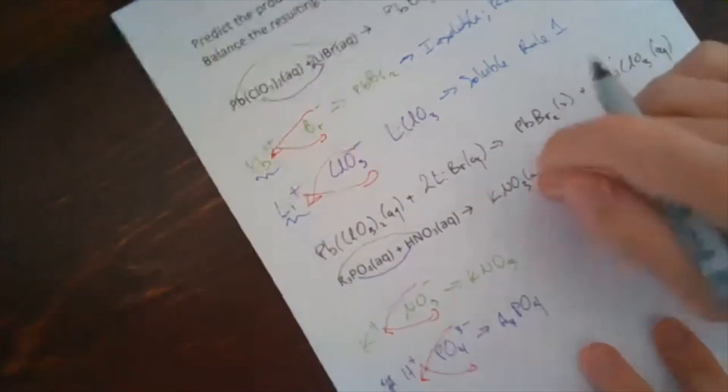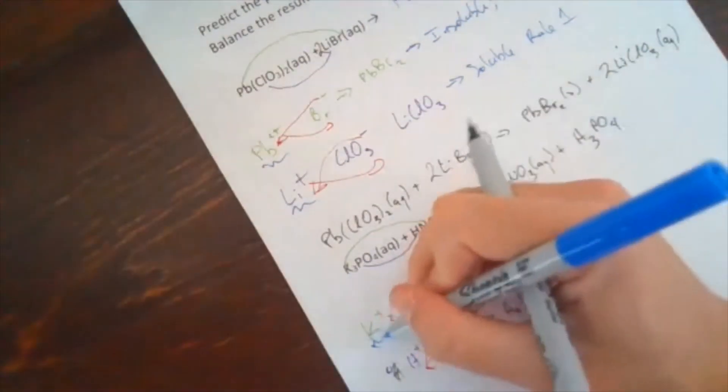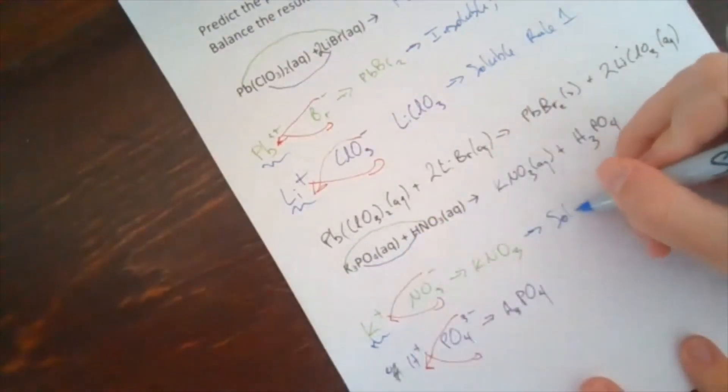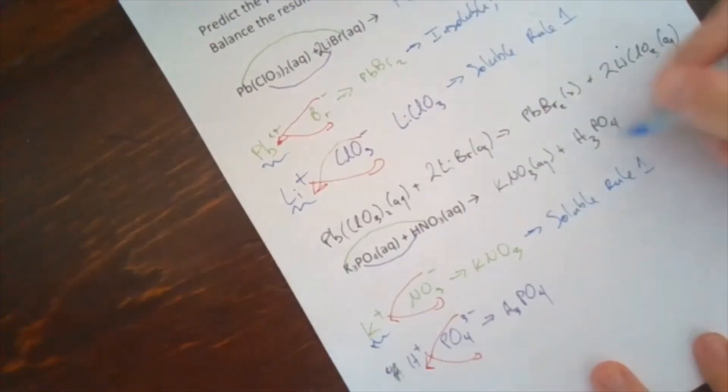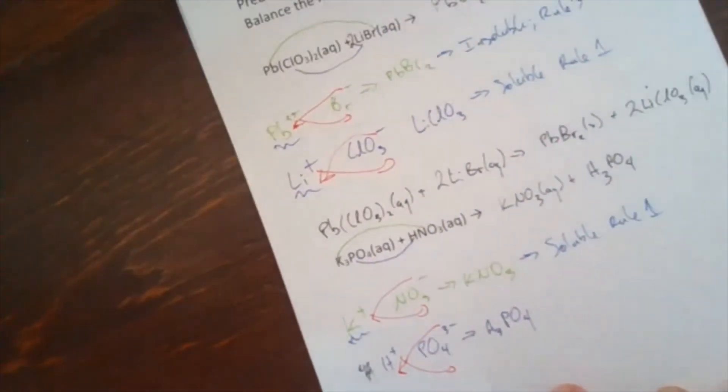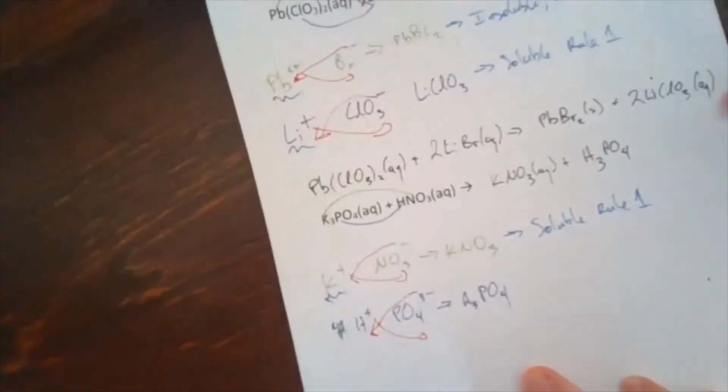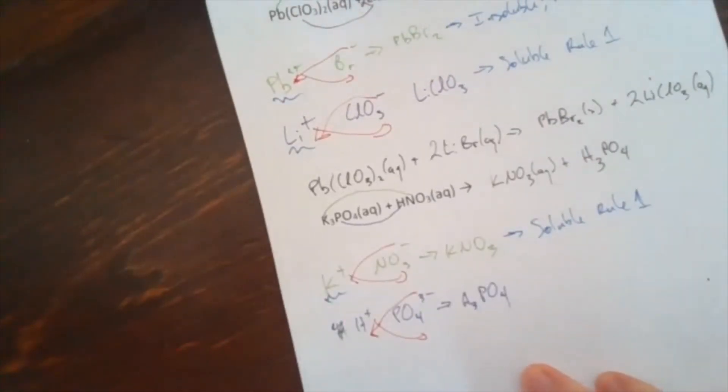I guess I kind of jumped the gun on the math. Sorry. KNO3 is soluble because of that K+ and because of the nitrate. So you call it rule one, but rule two also works. But potassium nitrate is extremely soluble. So soluble as it stands. So then H3PO4. This is a side rule off of our ionic compounds that we just want to learn that this thing is an acid.